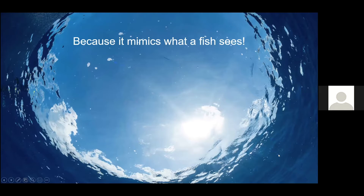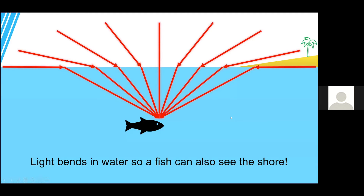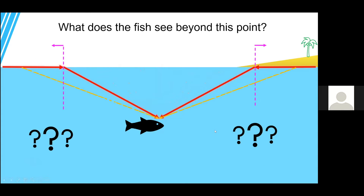It's called a fisheye lens because it mimics what a fish sees. When the fish looks up, the entire sky gets compressed to a smaller field of view. The schematic shows how light bends in water — the whole field of view outside gets compressed down to a smaller angle range. This makes spearfishing really difficult because the fish can see almost right up to the shore.